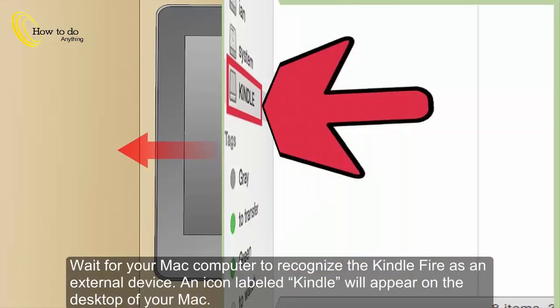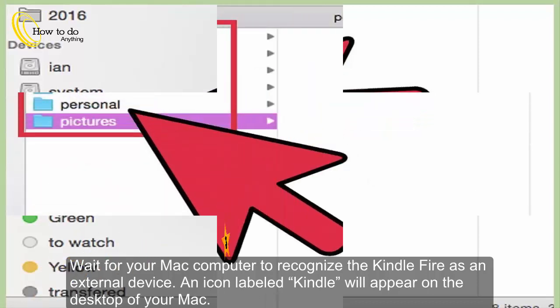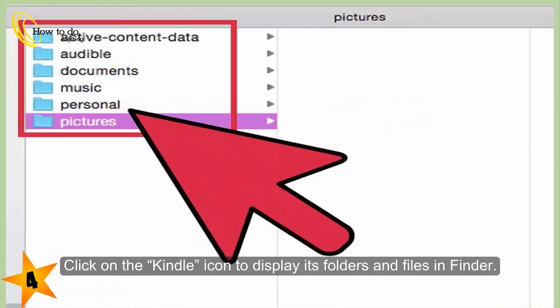Wait for your Mac computer to recognize the Kindle Fire as an external device. An icon labeled Kindle will appear on the desktop of your Mac. Click on the Kindle icon to display its folders and files in Finder.